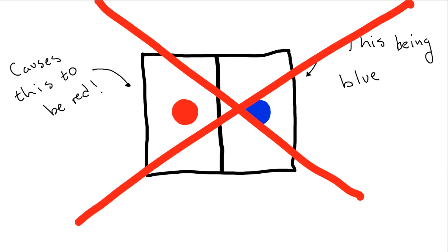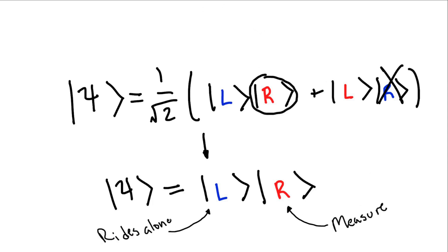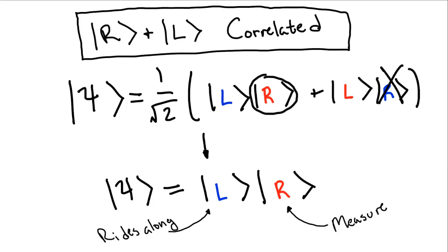Well, no. When I make the measurement, I collapse the wave function of the system. Since the wave functions of the two balls are inseparable, collapsing one simultaneously collapses the other. So it isn't that the ball on the right being red causes the ball on the left to be blue, it's just that the two measurements are correlated so that they're opposites. And as any statistician will tell you, correlation does not imply causation.